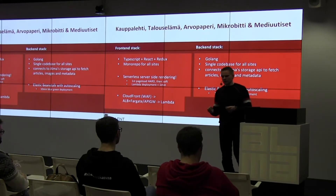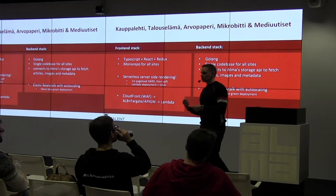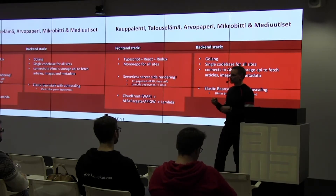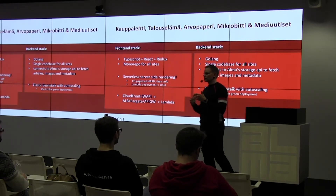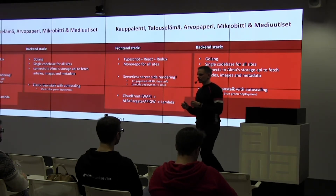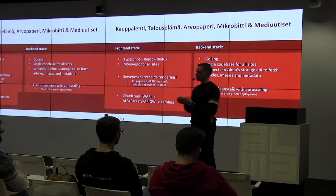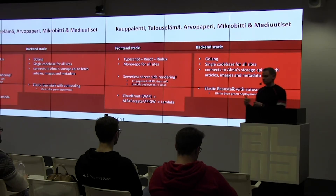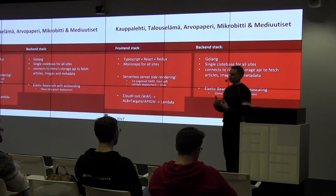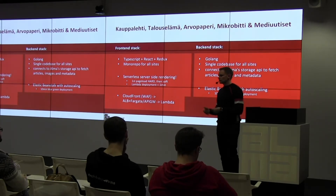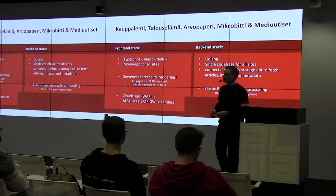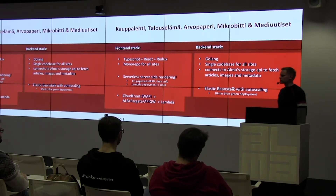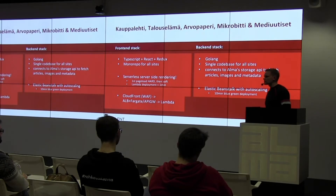We're not using Fargate for the backend because with Fargate you can only gradually update — you have both the old and new version running at the same time and there's no clean switching mechanism like with Beanstalk. You could create new Fargate environments and do the switching yourself with routing, but currently we are using Beanstalk. Fargate actually takes two to three minutes to deploy, which is a bit faster than Beanstalk but not as fast as Lambda.